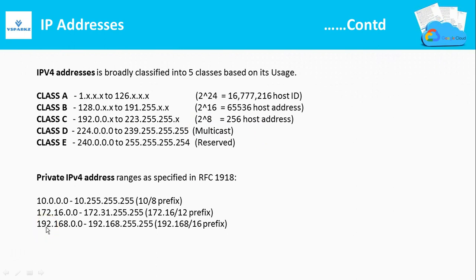On further classification, IP addresses are divided into private and public addresses. Internet-routable addresses are called public addresses, and intranet-routable addresses are called private addresses. The ranges of private addresses are given below. We are going to construct the GCP virtual network based on these private addresses only. These private address ranges are defined by the RFC standard RFC 1918.